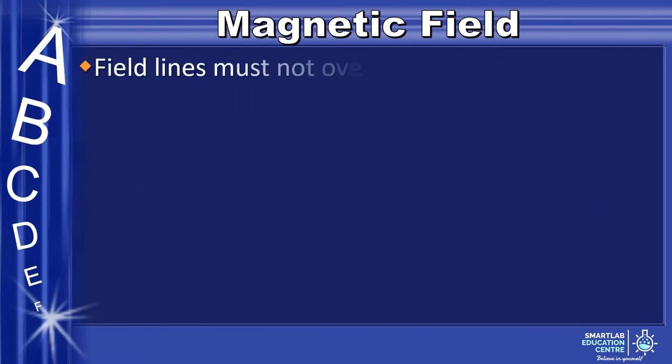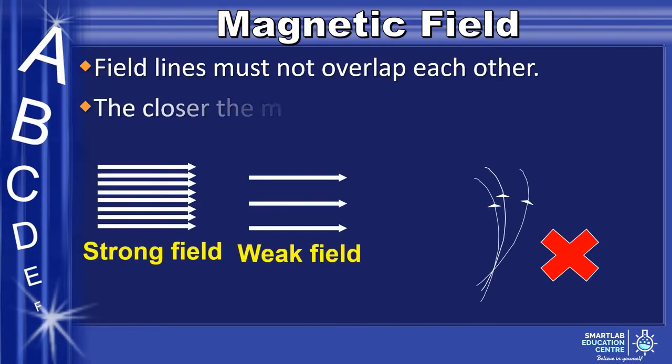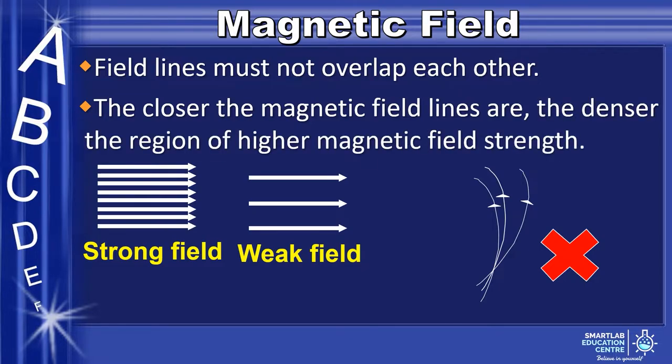When drawing field lines, they should not overlap with each other. The more concentrated the field lines are, the stronger the region of the magnetic field.